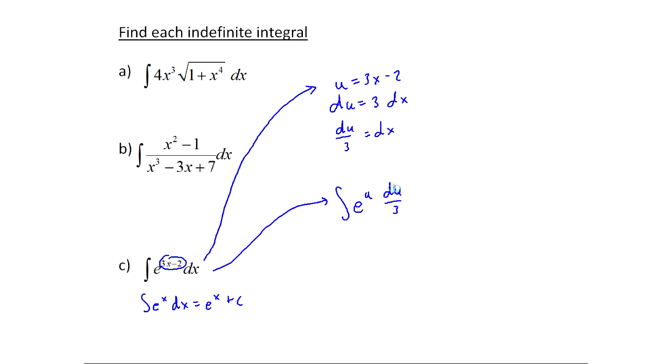All right, well this looks kind of strange, but it's kind of like before, right? The du over 3 is really a one-third, so I'll bring that out. One-third of the integral, e to the u, du. Now it's as easy as that first example I wrote down over here, I can say, well this is one-third e to the u plus c.